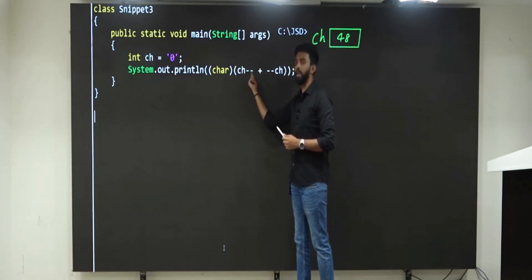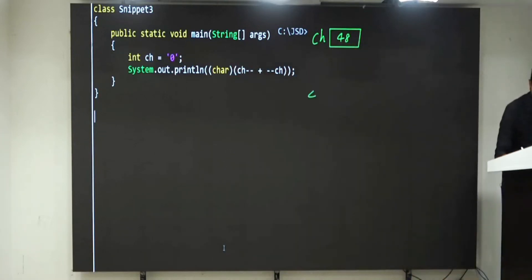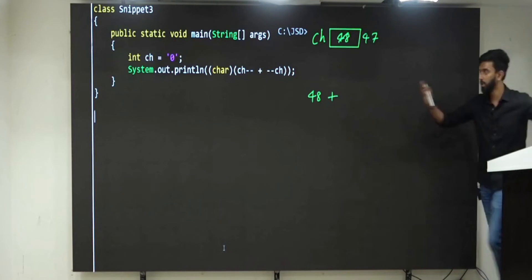Now ch minus minus means what? First use, then decrement. First if I use, what is the value? 48. I am just writing here, 48. Then decrement. What will it become? 47. Very good. That plus I will write as it is here.